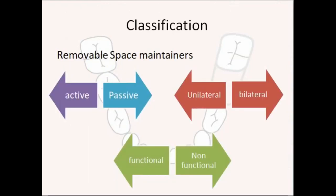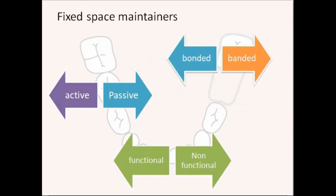Moving on to the classification — space maintainers are broadly classified as removable or fixed. Removable space maintainers can be active or passive, unilateral or bilateral, and functional or non-functional. Fixed space maintainers can be bonded or banded, active or passive, and functional or non-functional.